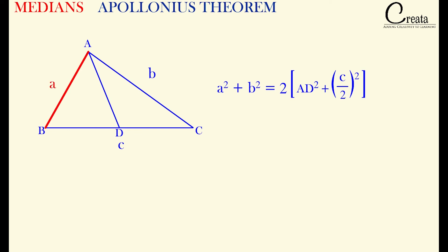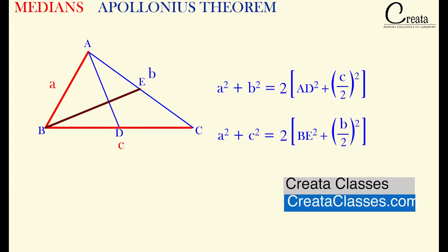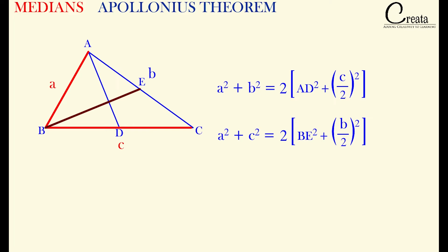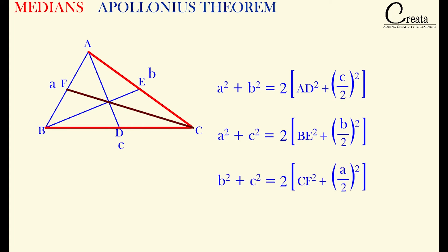If we take side a and side c, then we have to take the median BE, and this relation will change to: a² + c² = 2(BE² + (b/2)²). If we take the third median CF, then the relation will be: b² + c² = 2(CF² + (a/2)²). These relations are known as Apollonius theorem.